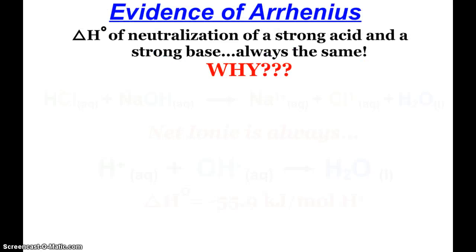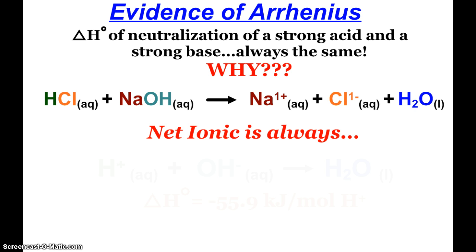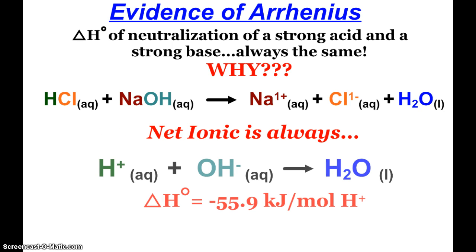A final note on Arrhenius is evidence, and we see this through the delta H of formation, the neutralization reactions of a strong acid and a strong base. It's always the same. Why? Here we go. So like if I take hydrochloric acid and sodium hydroxide, the net ionic equation for any strong acid mixing with any strong base is that hydrogen and hydroxide are going to form water neutralization. And that delta H is always negative 55.9 kilojoules per mole of the hydrogen ion. So that is evidence because the same reaction is occurring in each and every neutralization as Arrhenius predicted. But again, this is just strong acid, strong base.